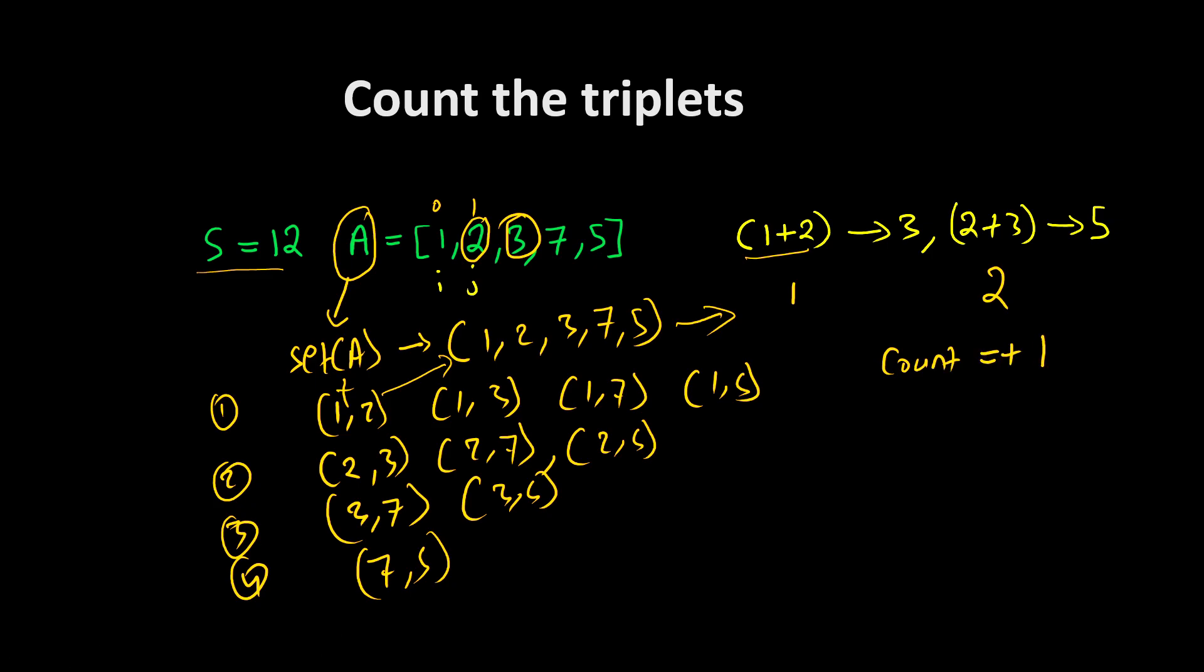Plus equals 1 here. So count variable will be updated. Initially, count was 0, now it will be 1. 1 plus 3 is 4, not present. 1 plus 7 is 8, not present. 1 plus 5 is also not present.